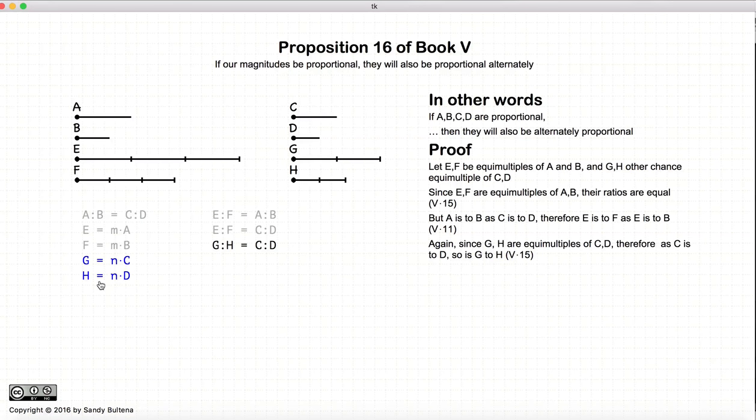G and H are equal multiples of C and D respectively. And as a consequence, again from proposition 15, the ratio G to H is equal to the ratio C to D, which is stated right there.